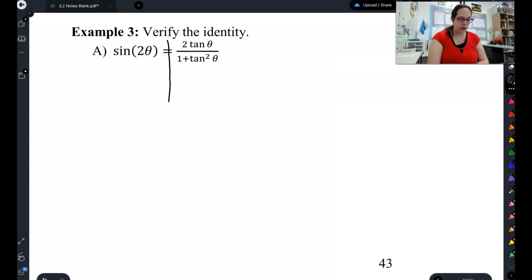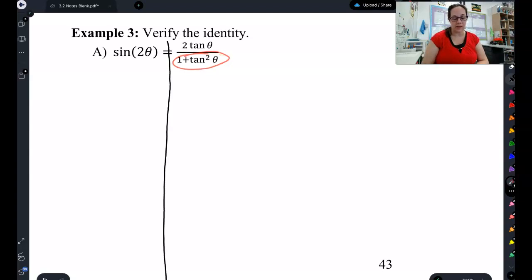I'm going to draw our trig identities line, and here's where I want you to start. Start on the right hand side, it's the more complicated side, and think of this as a Pythagorean identity. Change 1 plus tangent squared using a Pythagorean identity, then try to simplify it to get it to look like this. Pause the video, try this trig identity on your own, and then come back to check how you did.